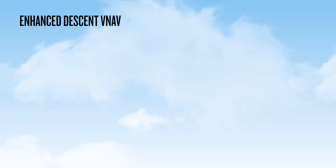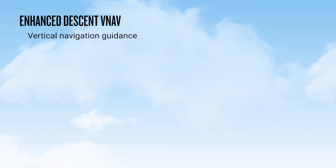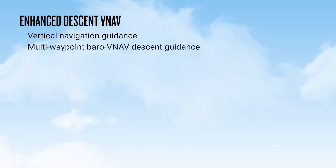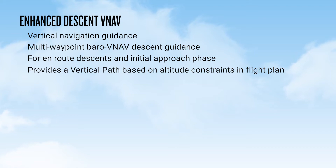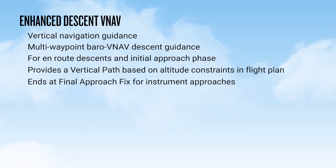Pilots have been taking advantage of the precise lateral navigation provided by Garmin devices for a long time, and with your G1000 NXI you have the same level of precision for vertical navigation. The system can provide multi-waypoint barrel VNAV descent guidance for both the enroute phase as well as for initial approach guidance. This guidance, provided in the form of a vertical path, is based on altitude constraints associated with lateral waypoints in the active flight plan. For instrument approaches, VNAV guidance ends at the final approach fix.